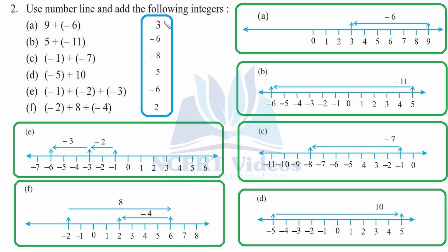Part b: five plus minus eleven. Initial position is at five; mark it and go eleven positions towards left: one, two, three, four, five, six, seven, eight, nine, ten, eleven. You reach minus six. Part c: minus one plus minus seven. Initial position is at minus one and you will count seven towards your left.